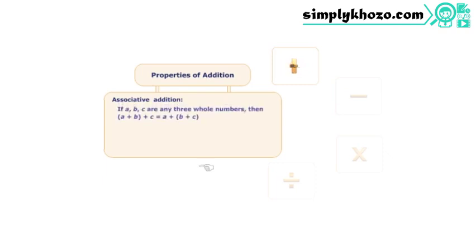While adding more than two whole numbers, the order of associating the numbers does not affect the final sum.